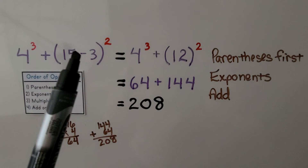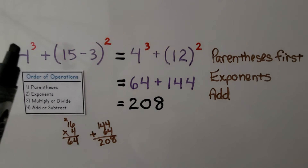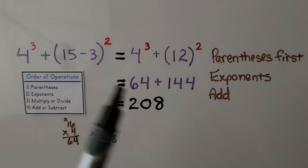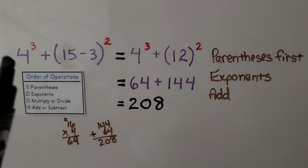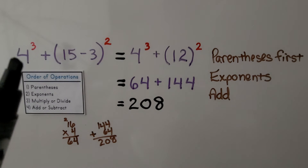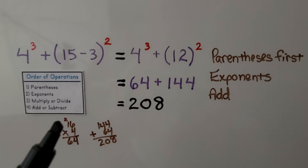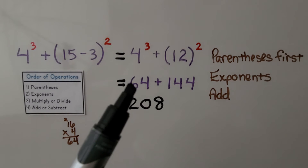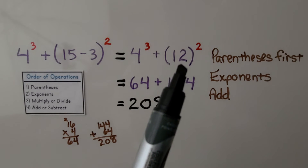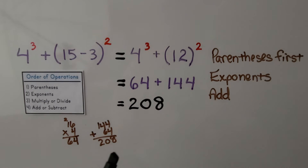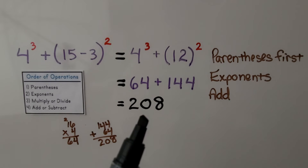Here we have parentheses and two exponents. We start within the parentheses first: 15 minus 3 is equal to 12. We have 4 raised to the third power: 4 times 4 times 4 — 4 times 4 is 16, and 16 times 4 is 64. And 12 raised to the second power is 12 times 12, which is 144. We add 144 plus 64, which equals 208.